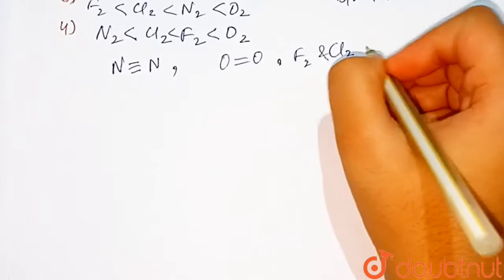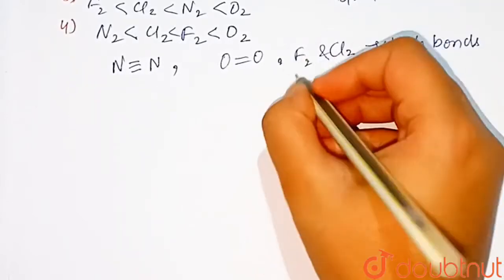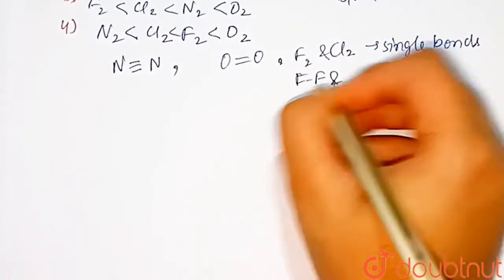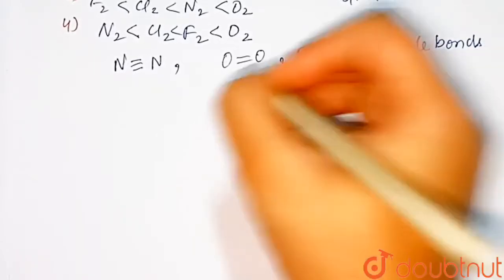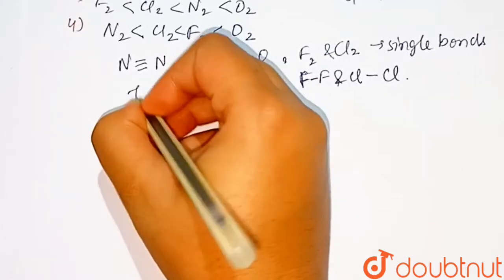and chlorine has single bond between the atoms. This is F-F and single bond Cl-Cl single bond. Here double bond and here triple bond.